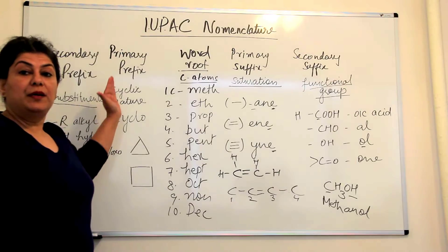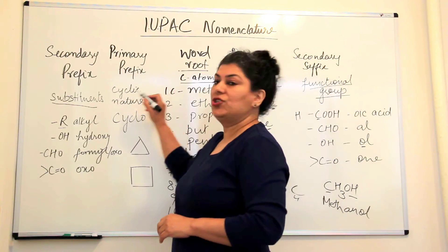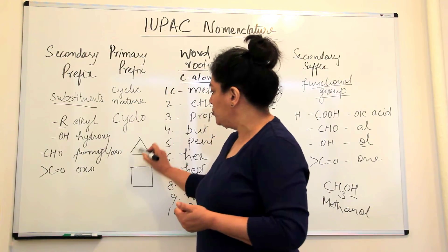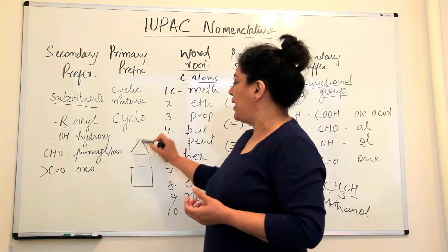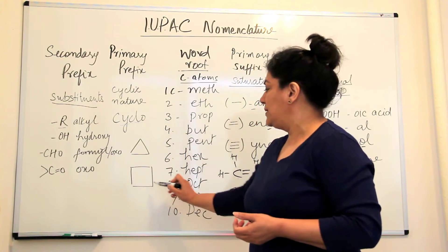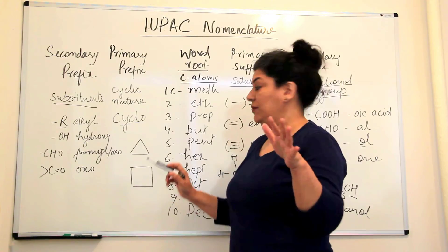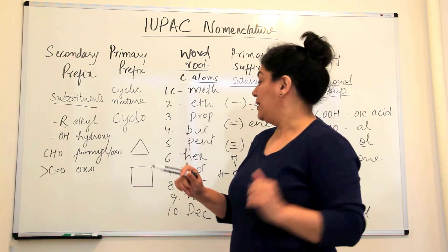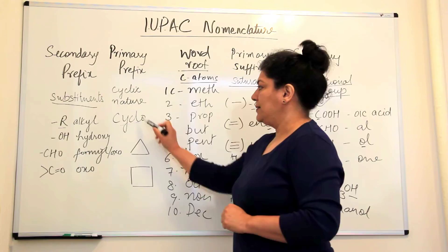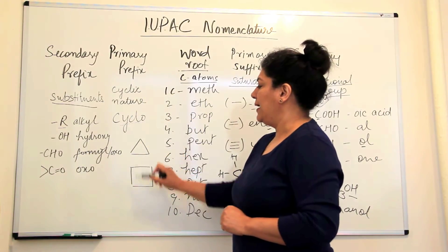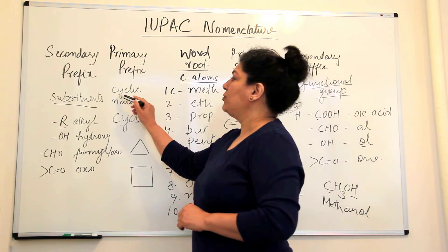The fourth part is the primary prefix. The primary prefix tells us whether a hydrocarbon is cyclic in nature or not. If the compound is cyclic — for example, you see this triangle here, which is cyclopropane — we use the prefix 'cyclo' for any cyclic hydrocarbon. This structure has four carbon atoms at its corners, and assuming all remaining valences are filled with hydrogens, it would be cyclobutane. The primary prefix tells us about the cyclic nature.